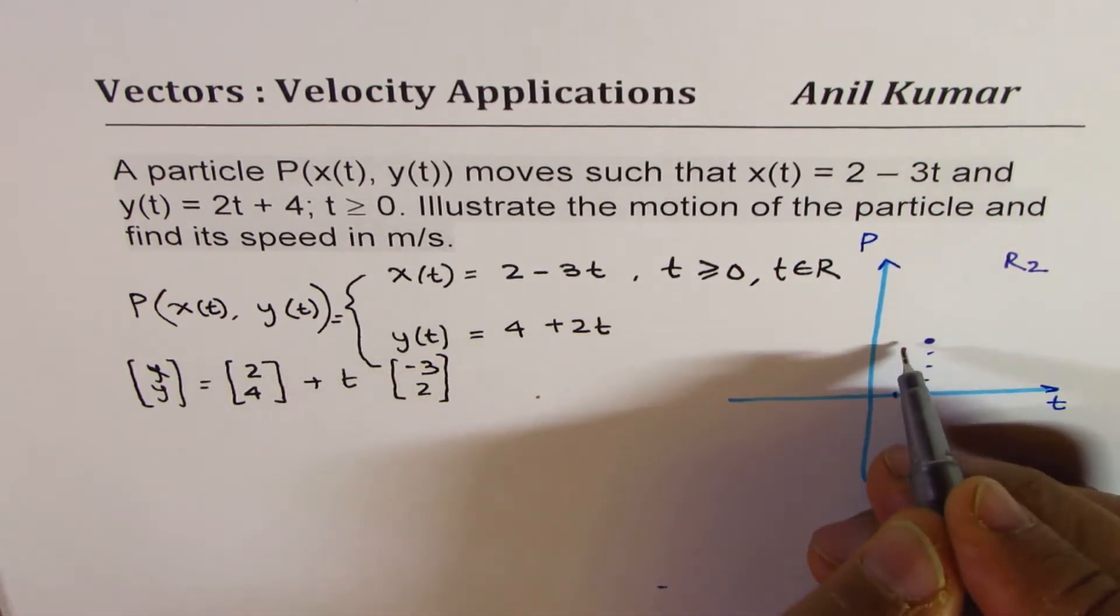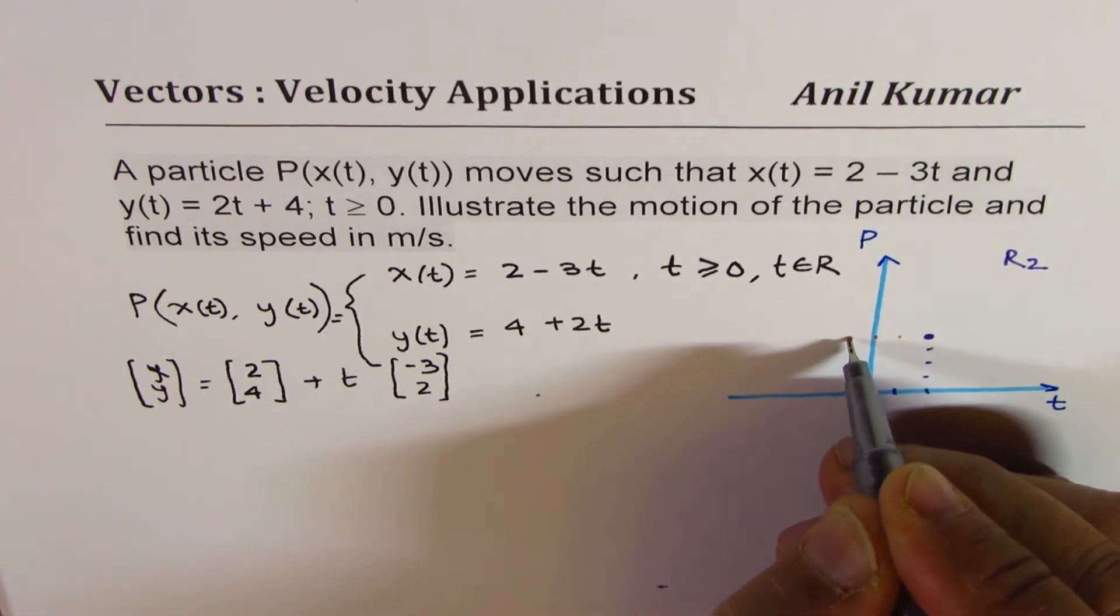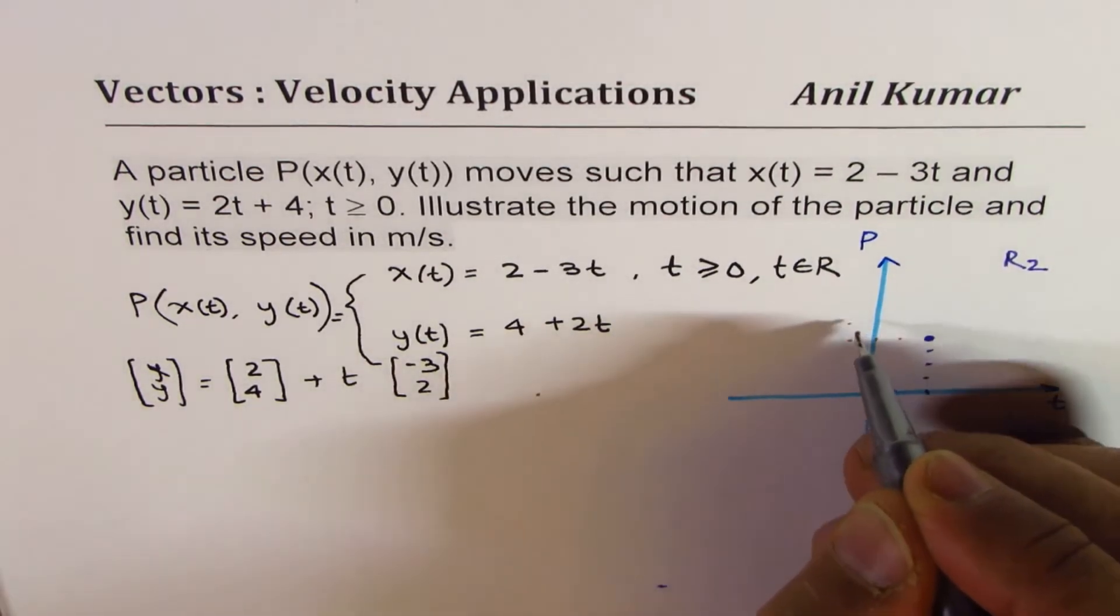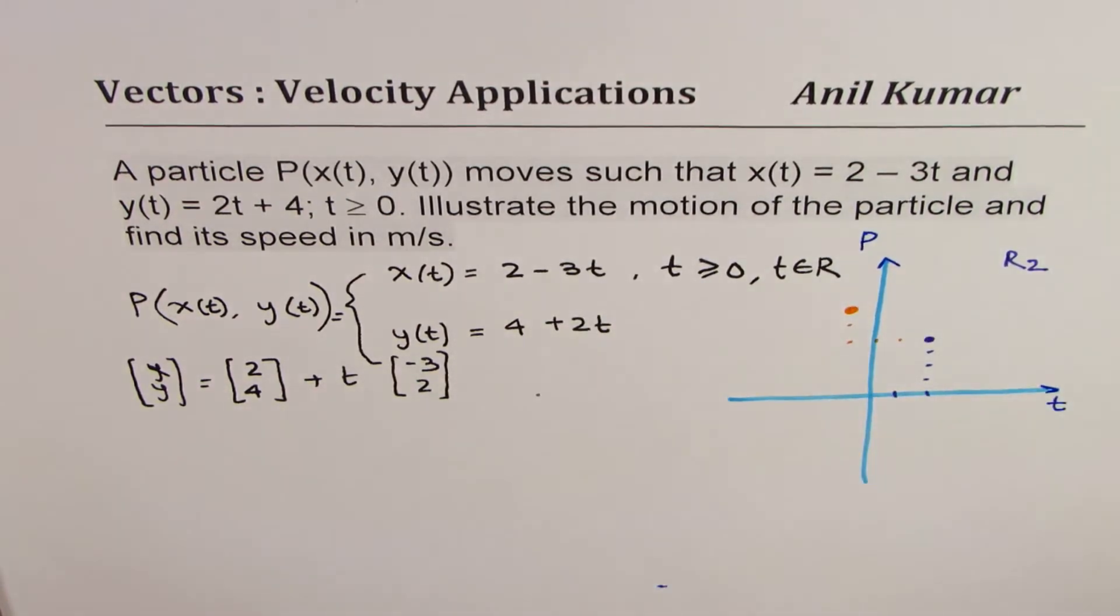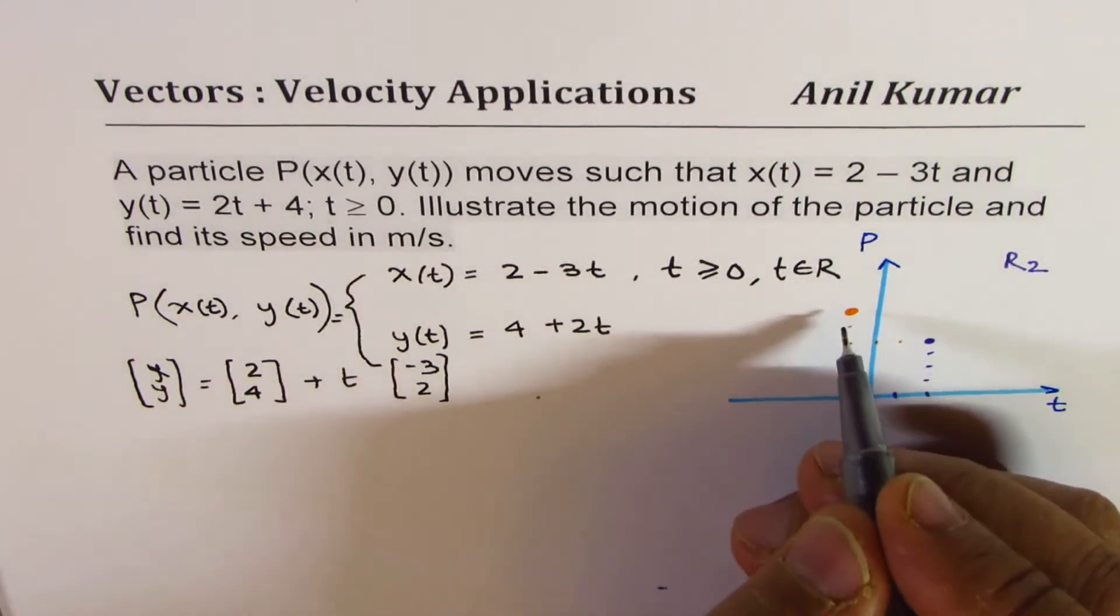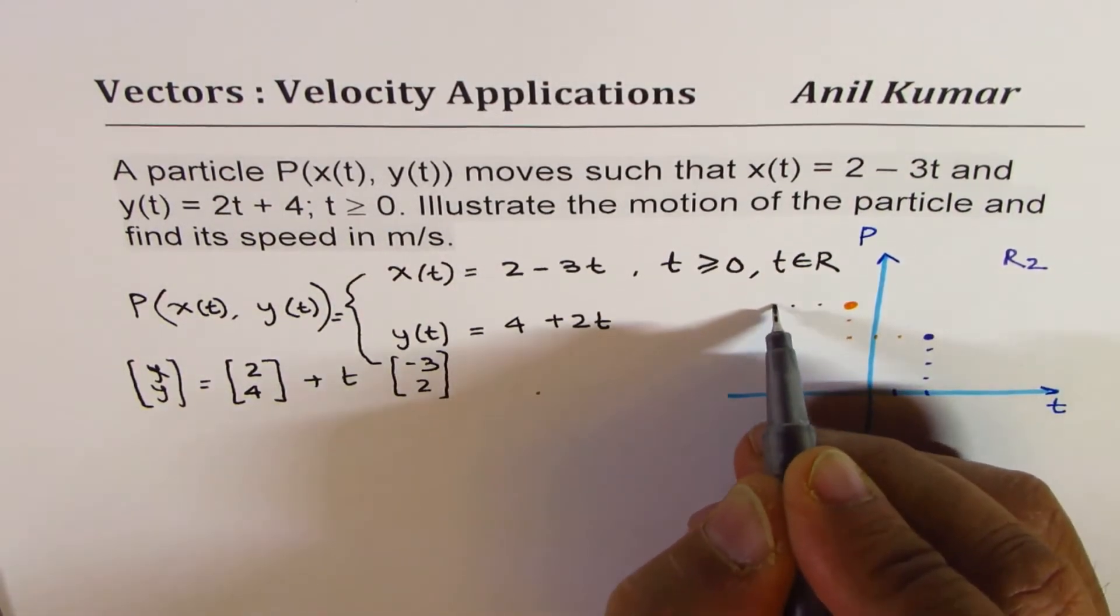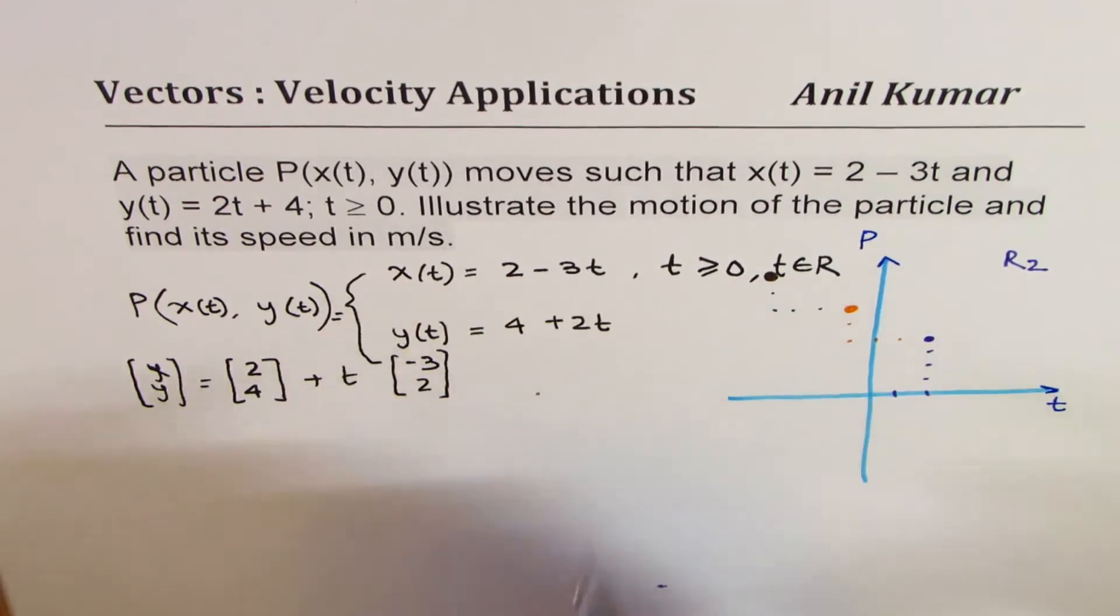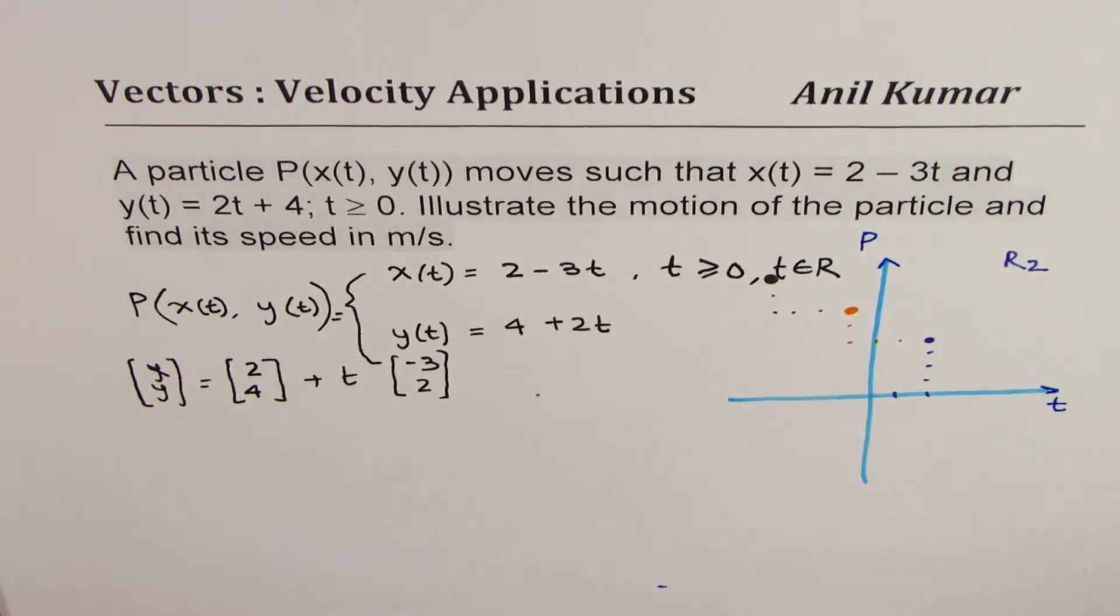Now from here we move by the vector minus 3, 2. Let me show you the next point. Minus 3 means 1, 2, 3 to the left, and 2 up means 1, 2—you move to this point. And then again to get more points: 1, 2, 3 to the left and then 2 up, 1, 2. That is how you are moving.